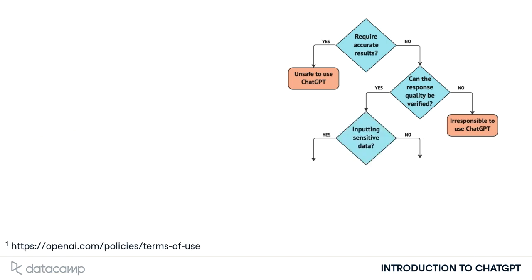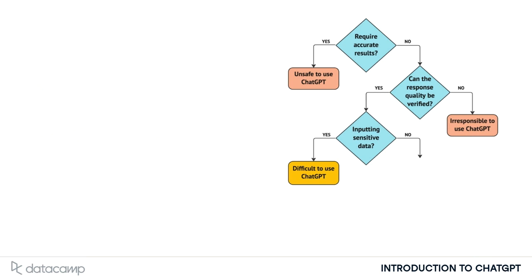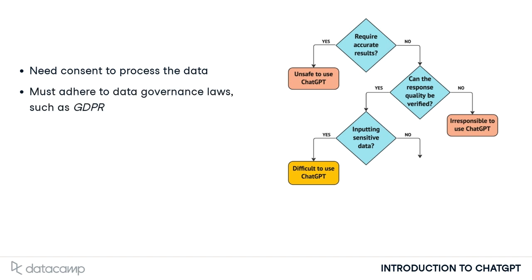The use case may require inputting sensitive data, such as customers' personal information or company source code. Enabling a use case involving sensitive data is difficult. We need to acquire the necessary consent to process the data, as well as ensuring that the applicable data governance laws, such as GDPR or CCPA, are being adhered to. For these use cases, it's best to seek legal counsel that specialises in data governance.